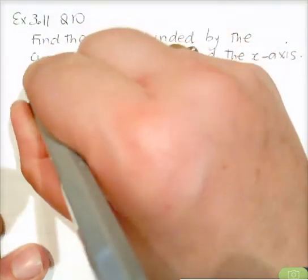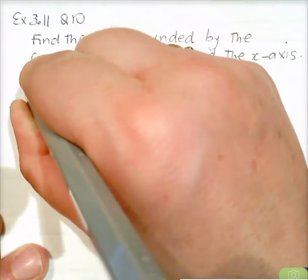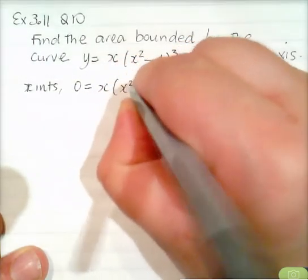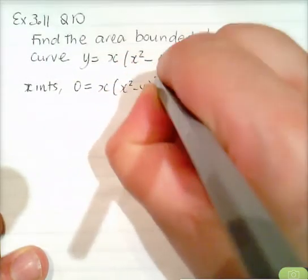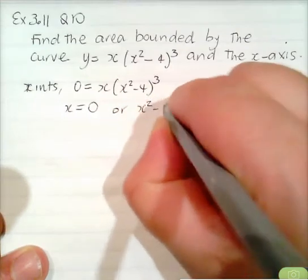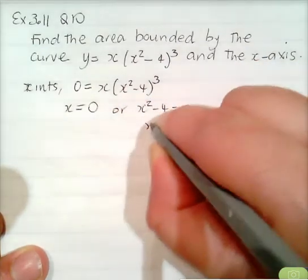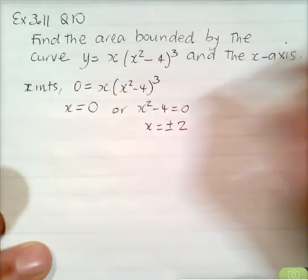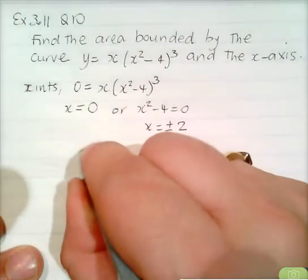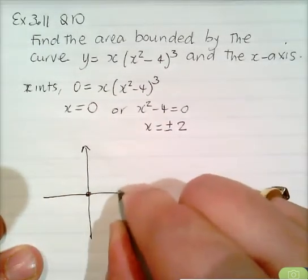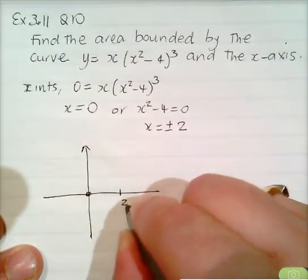To find the x-intercepts, we put y equals 0. We get x equals 0 or x squared minus 4 equals 0, meaning x squared equals 4, so x equals plus or minus 2. We have three x-intercepts: at 0, at 2, and at negative 2.